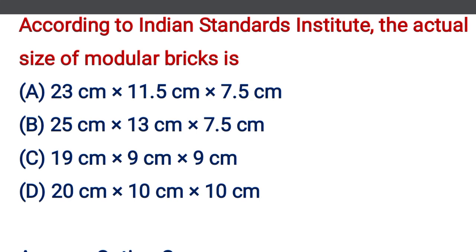According to the Indian Standard Institute, the actual size of modular brick is — option A: 23 cm × 11.5 cm × 7.5 cm, option B: 25 cm × 13 cm × 7.5 cm, option C: 19 cm × 9 cm × 9 cm, option D: 20 cm × 10 cm × 10 cm. The correct answer is option C, 19 cm × 9 cm × 9 cm.